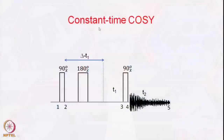Now we go forward to explore other two-dimensional experiments. The most important one, used in many different kinds of multidimensional experiments, is called the constant time COSY. The pulse sequence for that is indicated here. You start with a 90-degree X pulse, then a 180-degree X pulse, and another 90-degree X pulse.